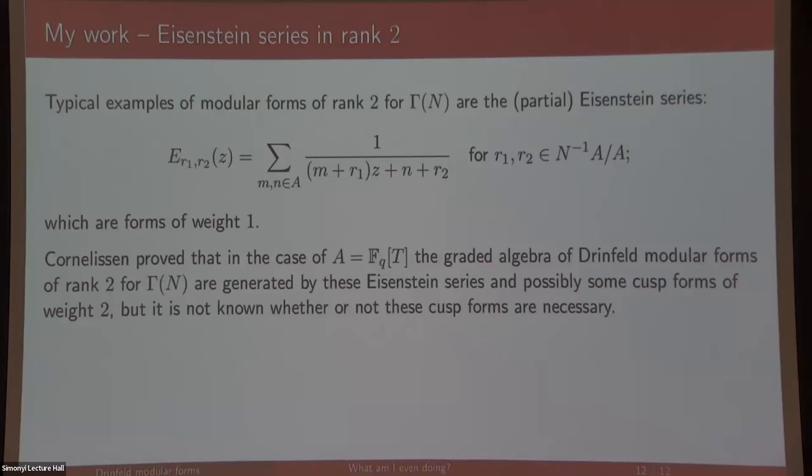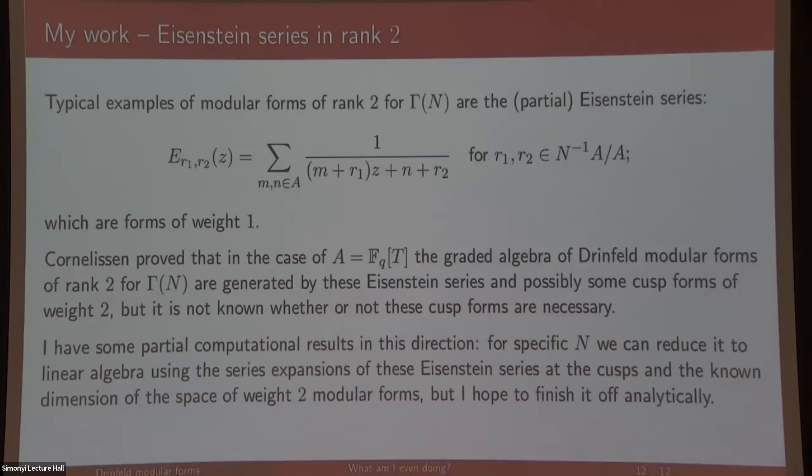Eisenstein series and possibly some cusp forms of weight two, but it's not clear whether we actually need these cusp forms of weight two. Maybe only the Eisenstein series are enough. I have some partial computational results. I have an algorithm which if you put in a specific value of n you can run the algorithm and it can tell you yes or no. The algorithm basically comes down to making a matrix and calculating the rank of the matrix, but as n grows larger this matrix gets very big so it gets very computationally intensive. I can do it for small n but I'm still working on that.